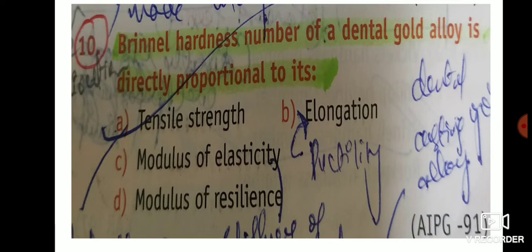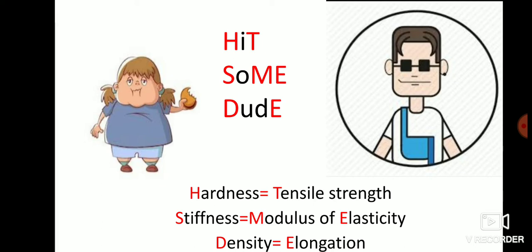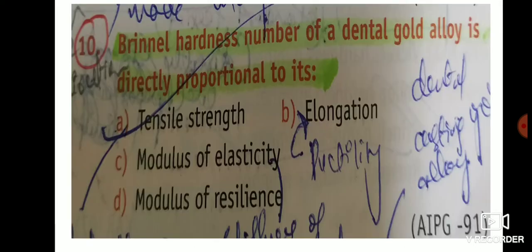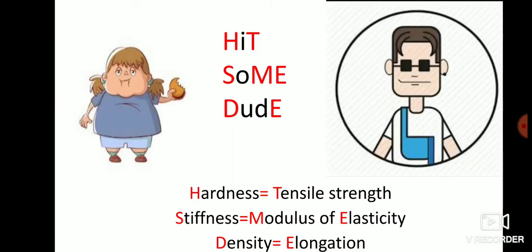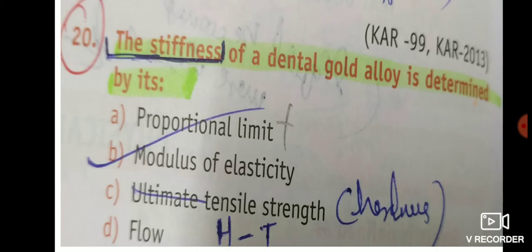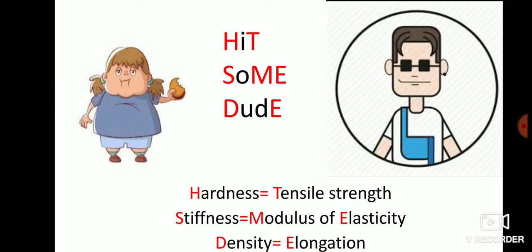The answer is tensile strength. It won't be elongation because elongation is related to density/ductility (DUDE). Next question: 'The steepness of a dental gold alloy is determined by its —.' I've already told you that stiffness/steepness equals modulus of elasticity from SOME. So whenever a question about steepness of a dental gold alloy comes up, the answer is modulus of elasticity.